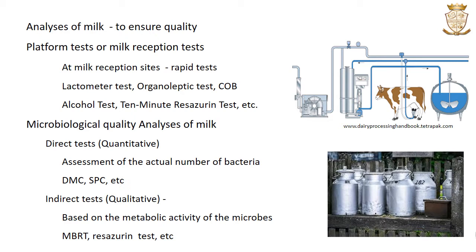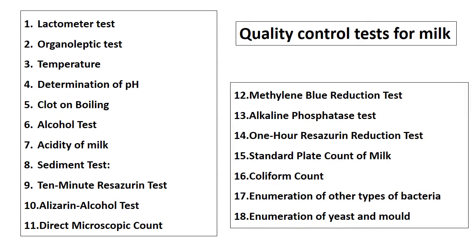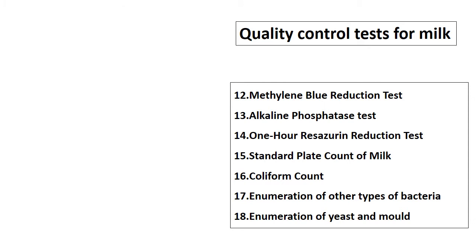We previously discussed various quality control tests for milk such as the lactometer test, organoleptic test, determination of temperature and pH, clot-on-boiling test, alcohol test, test for acidity of milk, sediment test, 10-minute resazurin test, alizarine alcohol test, and direct microscopic count. Now we will discuss the methylene blue reduction test, alkaline phosphatase test, one-hour resazurin reduction test, standard plate count, coliform count, and enumeration of other types of bacteria and yeast and mould in milk.